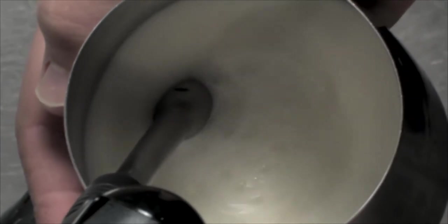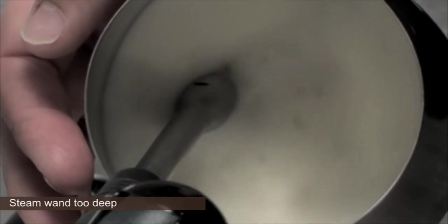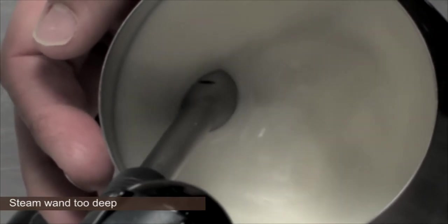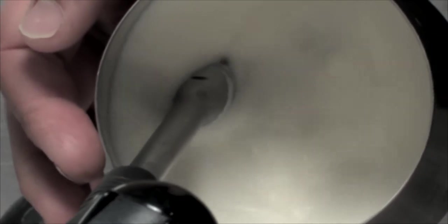A common mistake when people are learning how to froth milk is that they put the wand too deep inside the milk. Now the problem here, as you'll notice, is that as I'm thinning the milk I'm not getting any aeration in there whatsoever. So we're never going to get to the point where we've got any foam whatsoever.